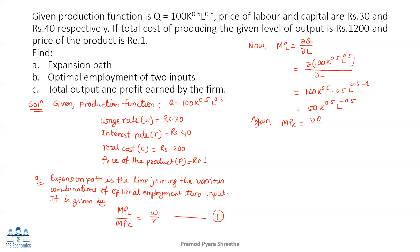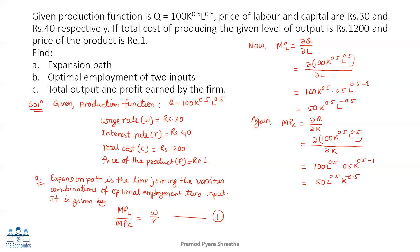MPK is the partial derivative of Q with respect to K. Substituting: differentiating Q equals 100K to the power 0.5 L to the power 0.5 with respect to K, treating L as constant, gives MPK equals 50 L to the power 0.5 K to the power negative 0.5.